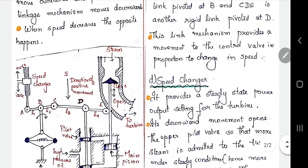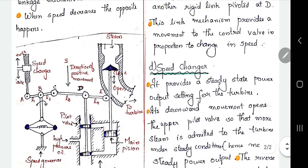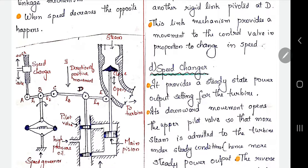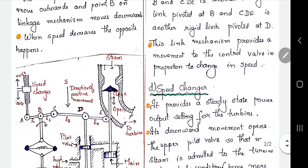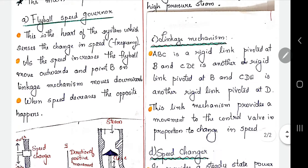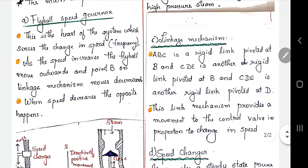When the speed decreases, the opposite happens. The flyballs return back to their original position, and the B portion moves upwards. This is how the flyball speed governor performs its function.